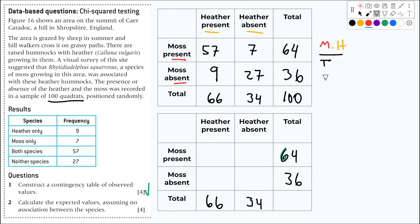This one is moss present, so it's 64 quadrants with moss present. This one here is heather present, so that is 66 heather present, by the grand total of 100, that is 42.2. Beautiful! And now you do the same for the other ones.